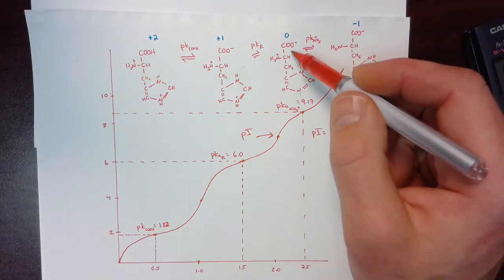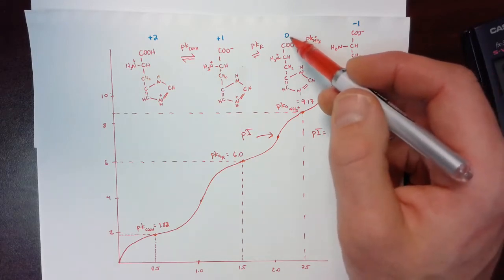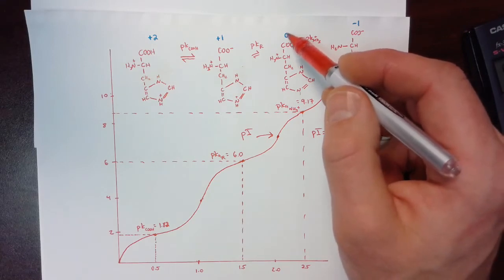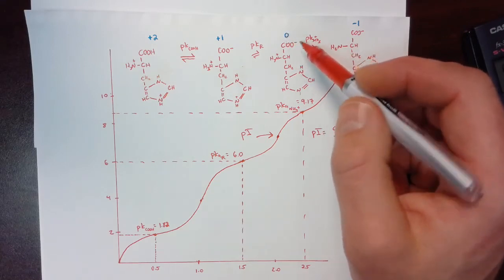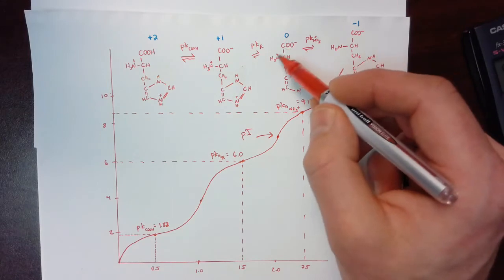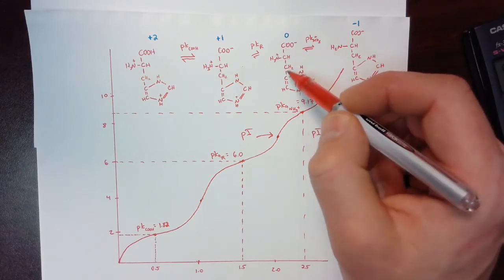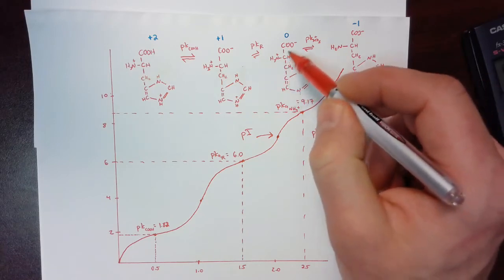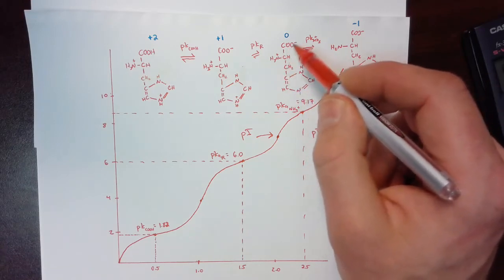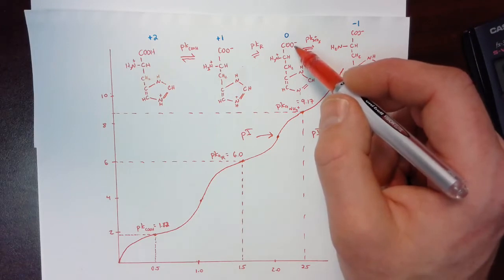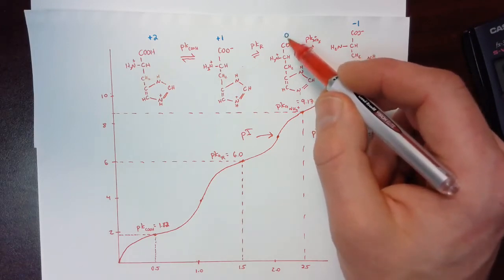not every single molecule, but the vast majority of the molecules will have a charge of zero overall. And the way looking at this, we see that there's a negative charge here, a positive charge here, and no other charges anywhere else in the molecule. So this is the zwitterionic form of histidine. And so it has a charge of zero.